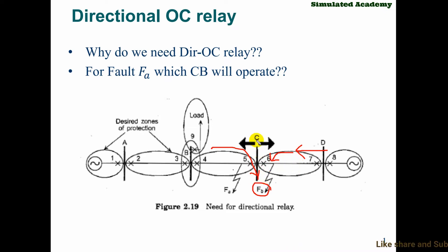If you want to find a reference: for fault at location between 5 and 6 — in 5 the current is towards the bus, and in 6 it is away from the bus. So who needs to operate? Circuit breaker 6 needs to operate.